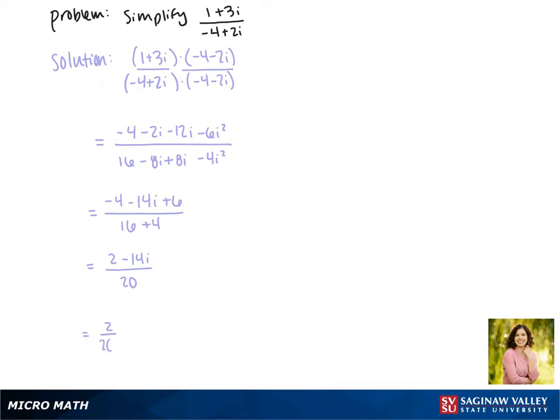Now we can break this up into 2 over 20 minus 14 over 20i. And now our fractions can be simplified to 1 tenth minus 7 tenths times i. This is as simplified as we can make our expression, so this is our final answer.